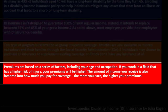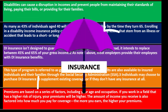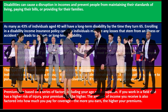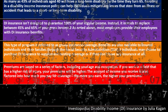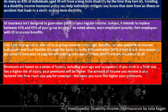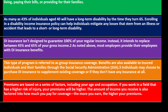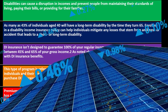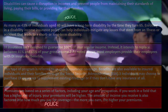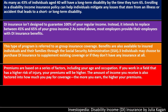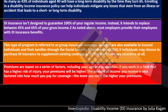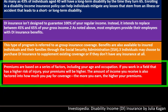Premiums are based on a series of factors including your age and occupation. If you work in a field with a higher risk of injury, your premiums will be higher. Insurance companies pool people together — they're hoping disabilities don't happen, but on aggregate they can make projections on the stats and use those to calculate rates. If you're working somewhere like as a police officer or firefighter, the risks are higher, which impacts the insurance calculations.